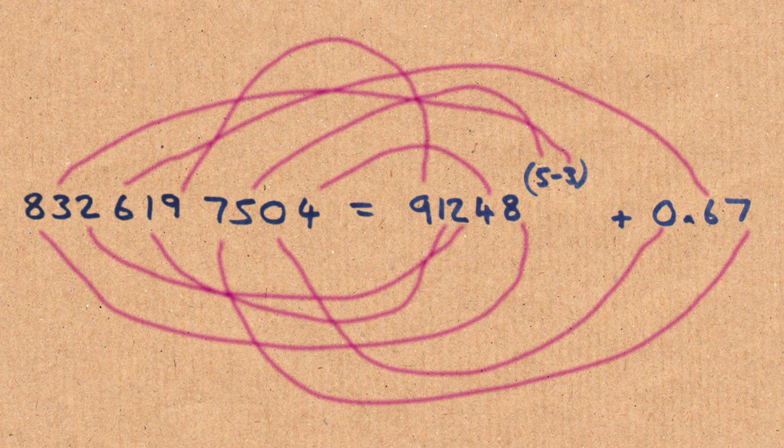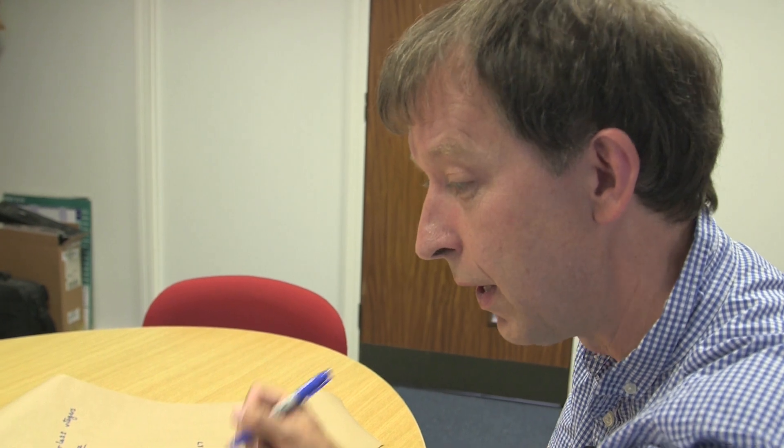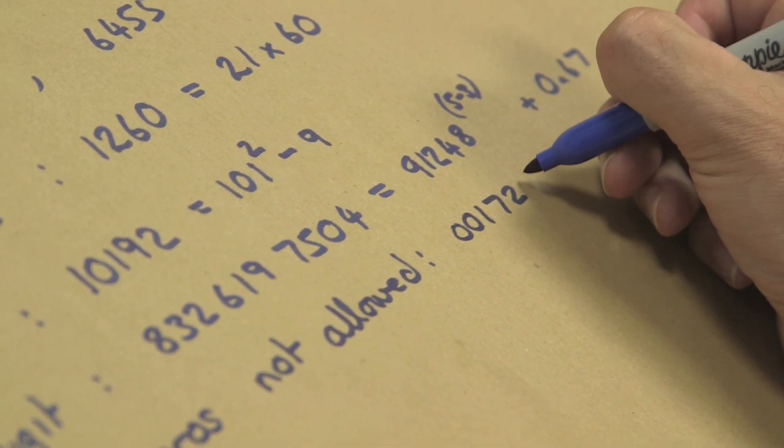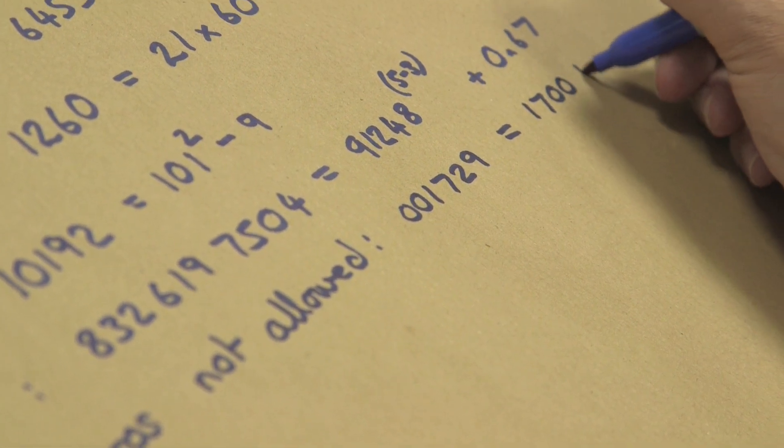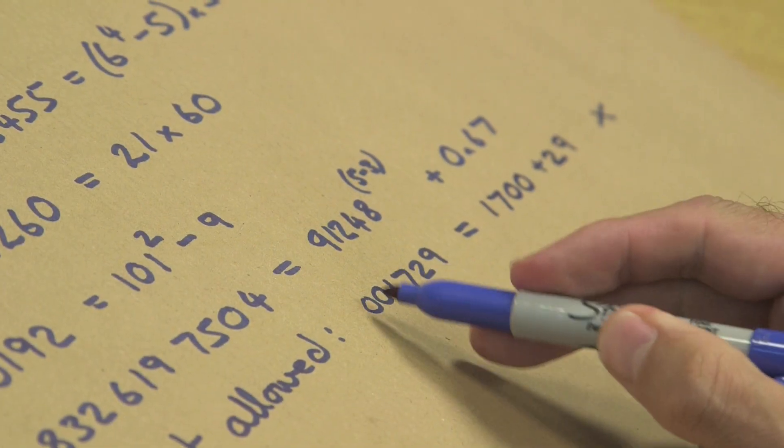Well, the 0's in here, and so it's part of it. There is an interesting caveat, which I should have mentioned. You can't have leading 0's, they're not allowed. For example, something like 001729, and write that as 1700 plus 29. I'm not allowed to have the leading 0's in there in that definition.